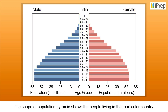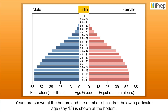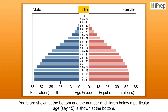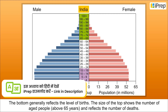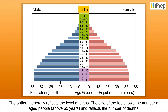The shape of the population pyramid shows the people living in that particular country. Years are shown at the bottom and the number of children below a particular age, say 15, is shown at the bottom. The bottom generally reflects the level of births. The size of the top shows the number of aged people above 65 years and reflects the number of deaths.